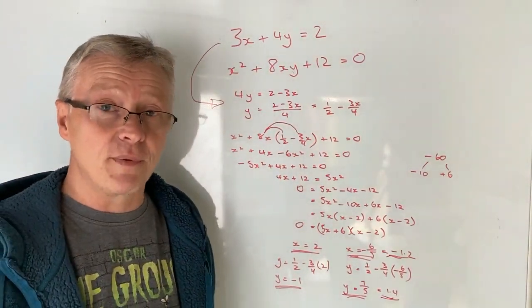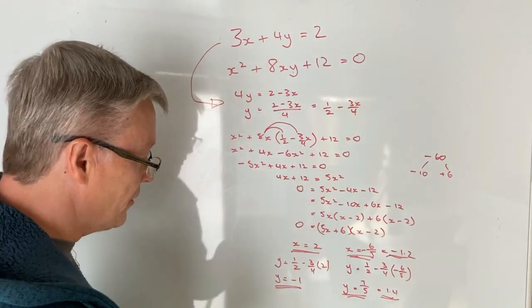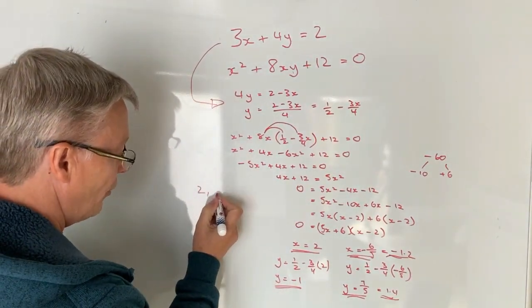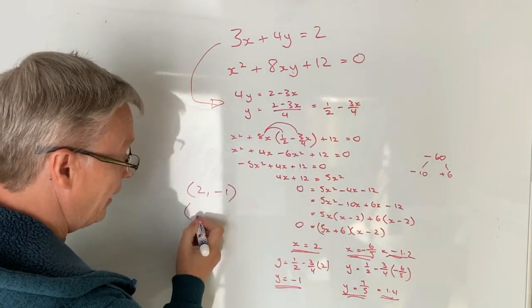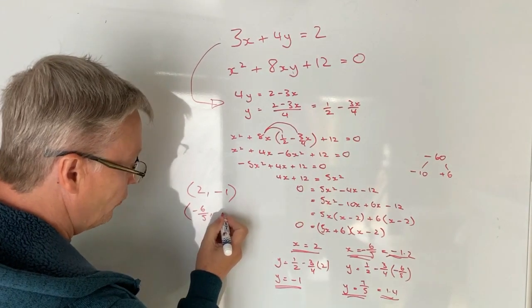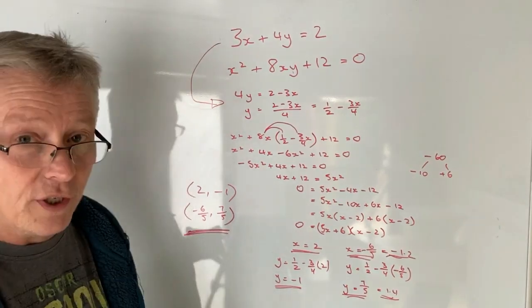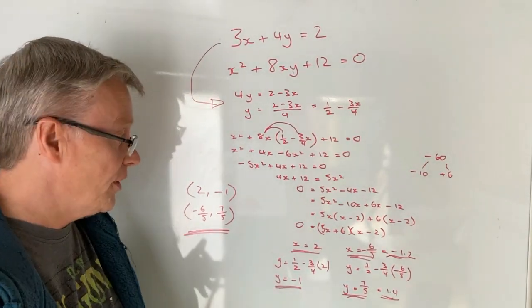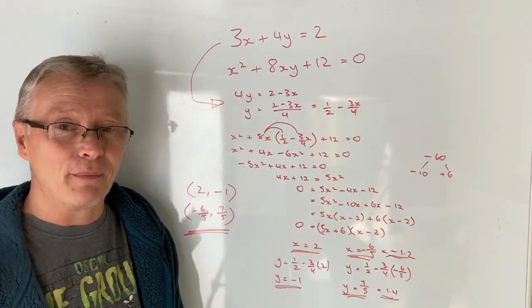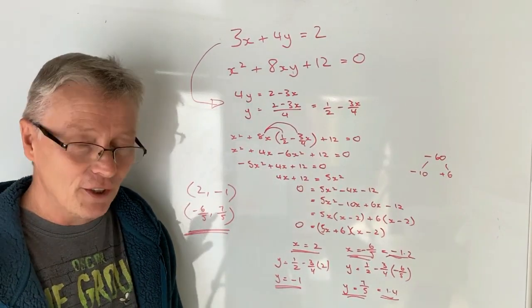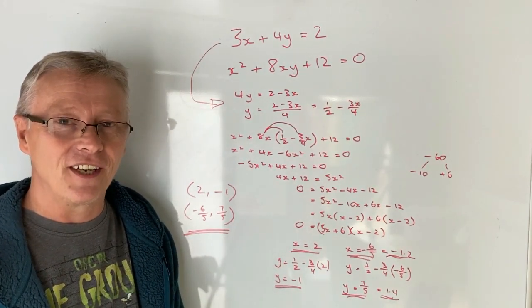Okay and that solves this particular question. So now if you're asked to write the answer you could write it out as x is 2 and y is minus 1, and x is going to be minus 6 over 5 and y is going to be 7 over 5 and that would be the solution to this particular question. I hope you found it useful. It does take a bit of working through. Please do add a comment below if you're not sure about anything. I'll always come back to you. Subscribe to the channel. I love seeing you inside the next video.